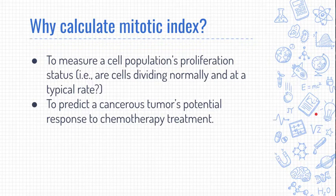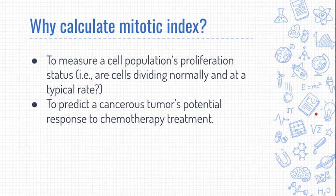You would expect a much higher mitotic index in the part that's growing because those cells are dividing. But more importantly, clinically, you might want to look at a cancerous tumor and examine its mitotic index, because that's going to tell you how fast those cells are dividing and how aggressive that tumor is. Doctors will make different decisions about patient care and treatment depending on how fast that tumor is growing, which can indicate how likely it is to spread.